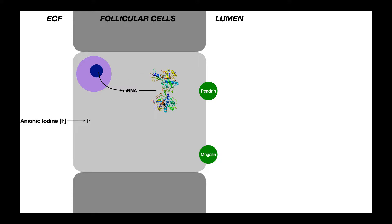Here's one follicular cell with a cell nucleus containing DNA. Thyroid hormone synthesis doesn't just involve small molecules — it actually involves a large protein. To make this protein, we need gene expression: transcription and translation. The DNA within the nucleus is transcribed to produce mRNA, which is then translated into a protein called thyroglobulin. Thyroglobulin is where all the thyroid hormones are going to come from. Thyroid hormone synthesis also requires iodide — the anionic form of iodine — which must be transported from the blood into the follicular cell.